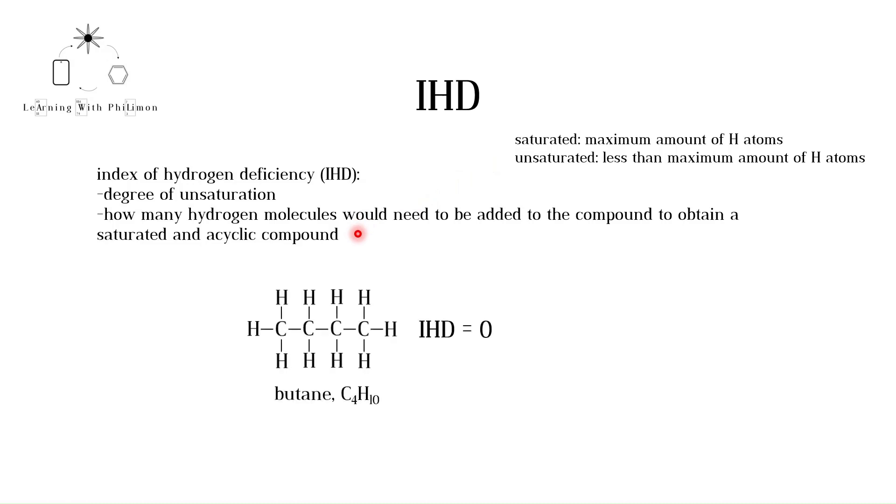An alkane, such as butane, has an IHD of zero. This is because the carbon atoms are already bonded to the maximum amount of hydrogen atoms possible. You cannot add any more hydrogen molecules.